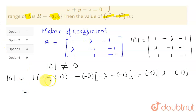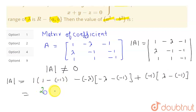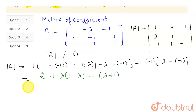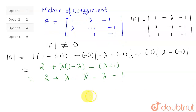Simplifying: the determinant equals 2 + λ - λ² - λ - 1. The plus λ and minus λ cancel out, and 2 minus 1 gives 1, so the determinant equals 1 - λ².